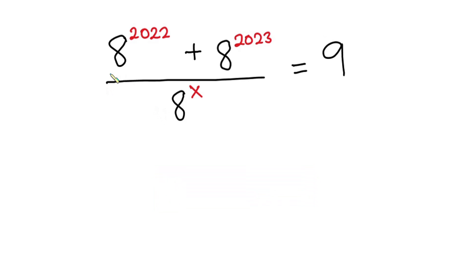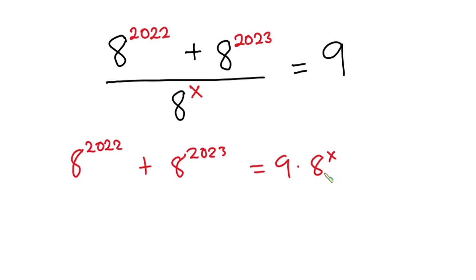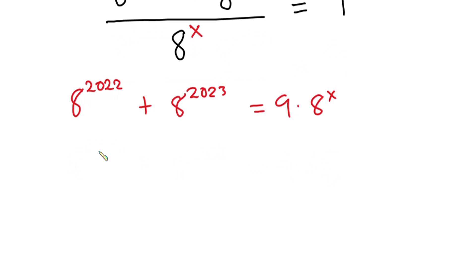First of all, I'm going to multiply both sides of the equation by a to the power x. So if I do that, I have a to the power 2022 plus a to the power 2023 is equal to 9 times a to the power x.